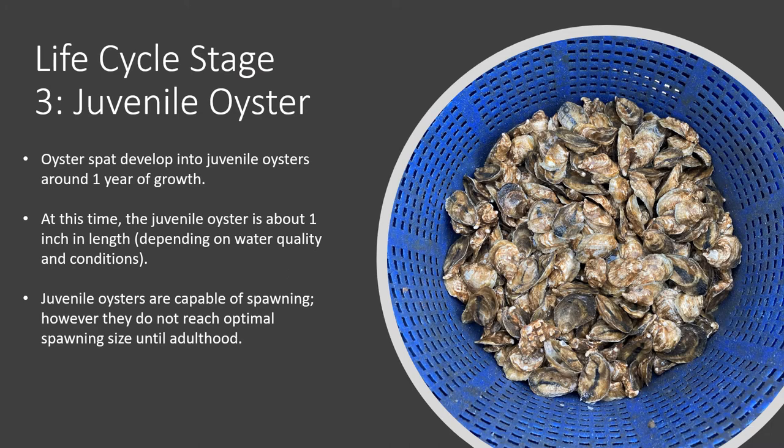Spat reach their next life cycle phase after about one year of growth. At this time, they become juvenile oysters and are about one inch in length. Although juvenile oysters are fertile and capable of spawning, their fecundity, or ability to produce an abundance of offspring, peaks during adulthood. A fun fact about oysters is they are hermaphroditic, meaning they can change their sex throughout their life. In fact, most juvenile oysters are males that become females in their late juvenile and adulthood stages.